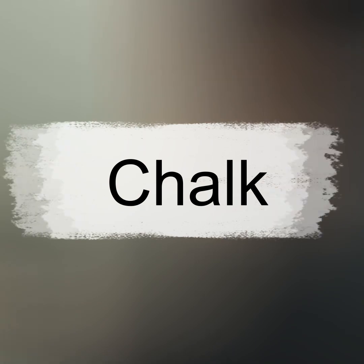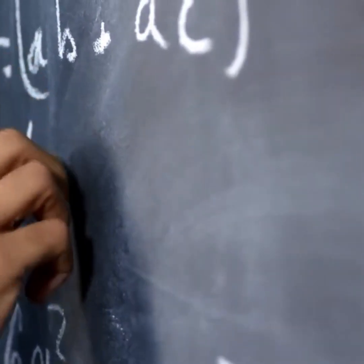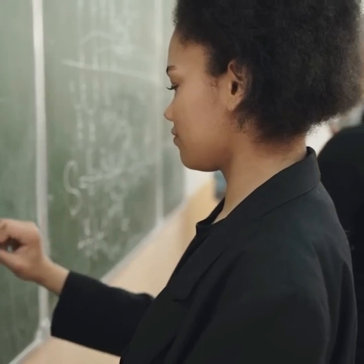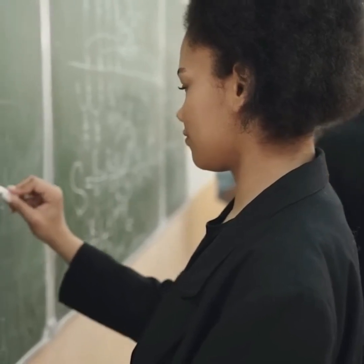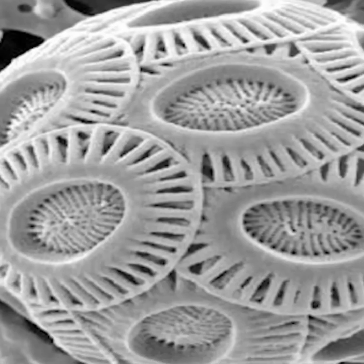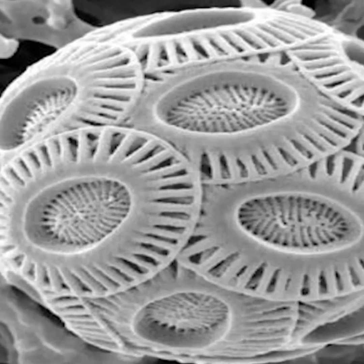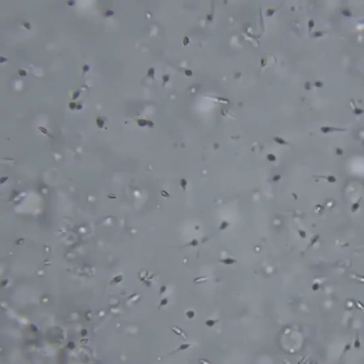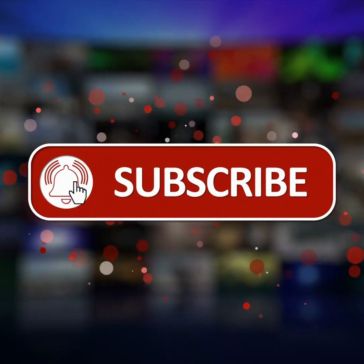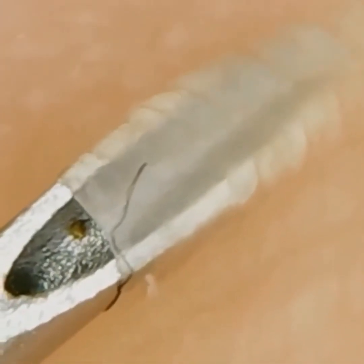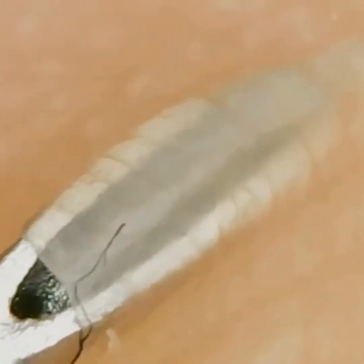Chalk. Friends, chalk is used for many things all over the world. Although chalks are made of lime, when you look at chalk under the microscope, it looks very strange. If you have learned and seen something new from today's video, please like our video, subscribe to the channel, and share the video as much as possible so that everyone can gain this knowledge.